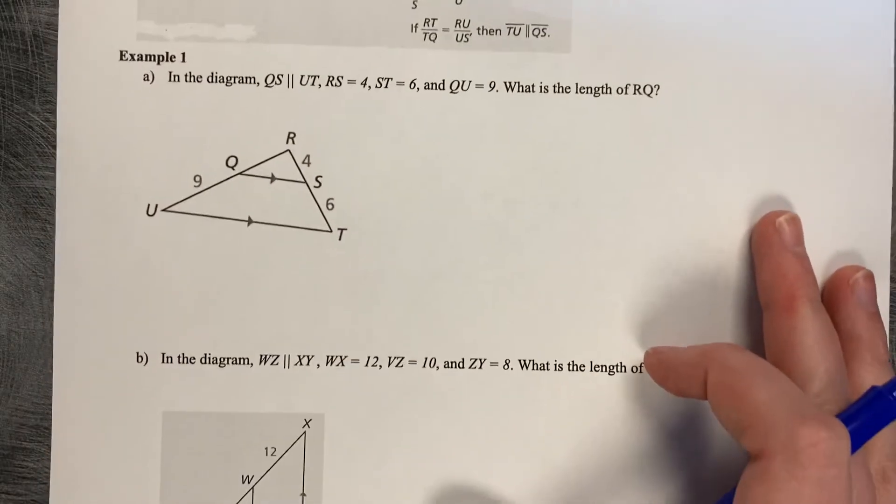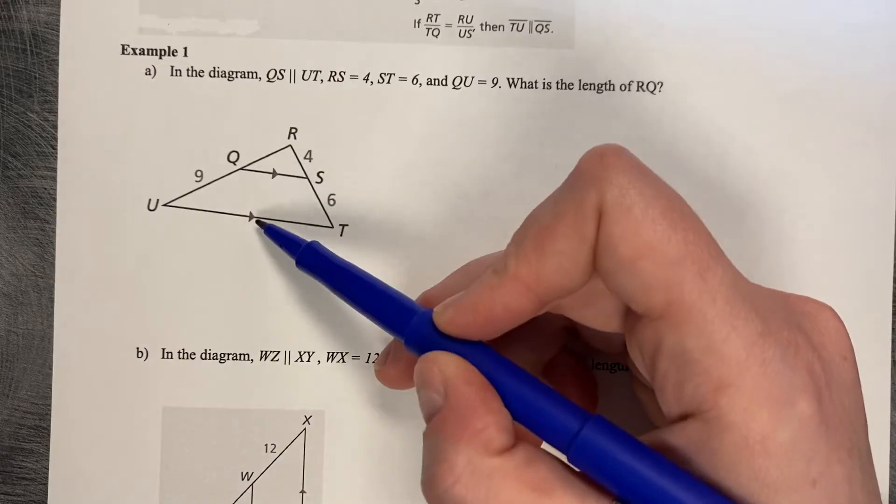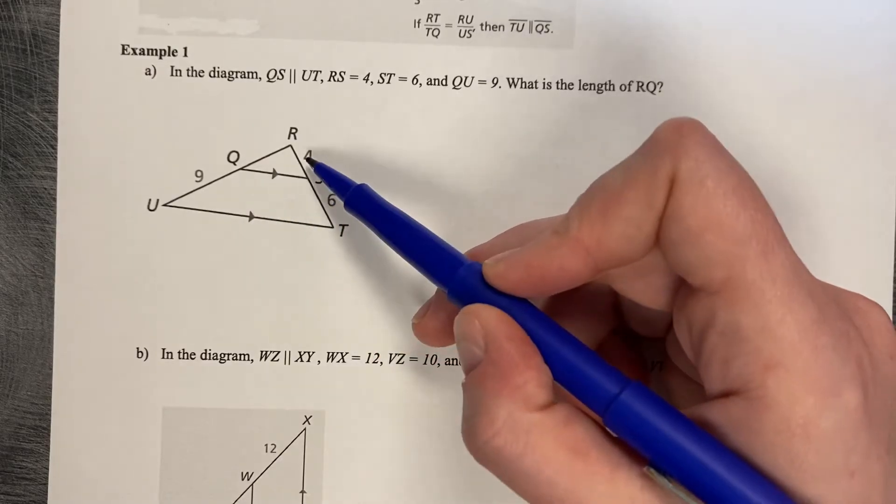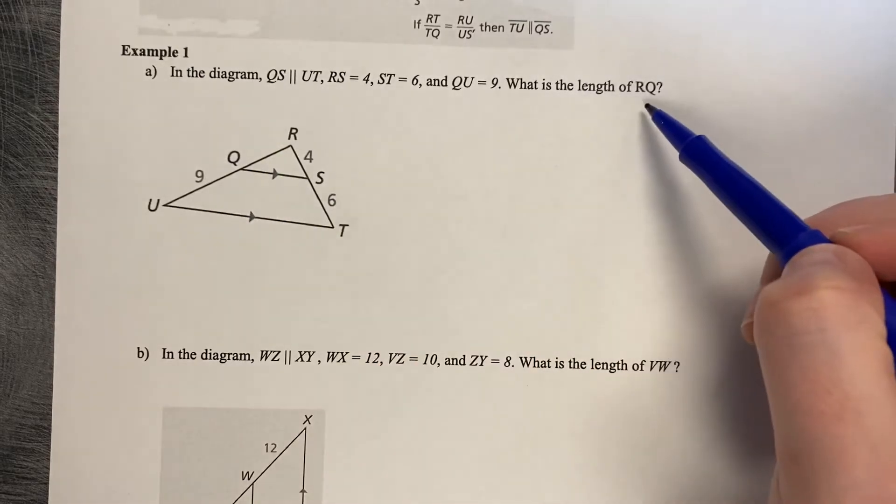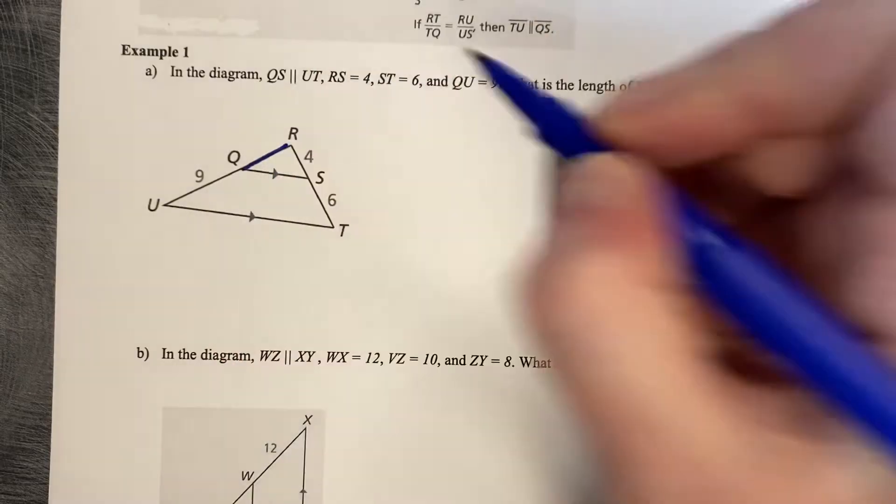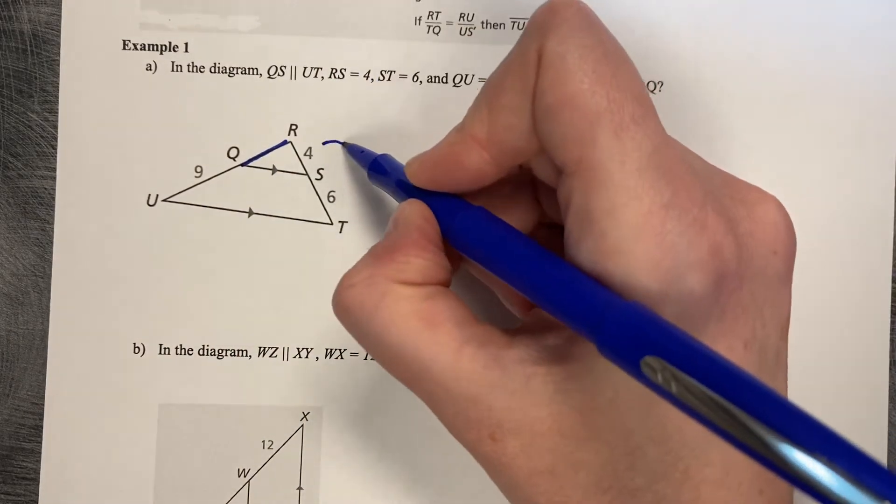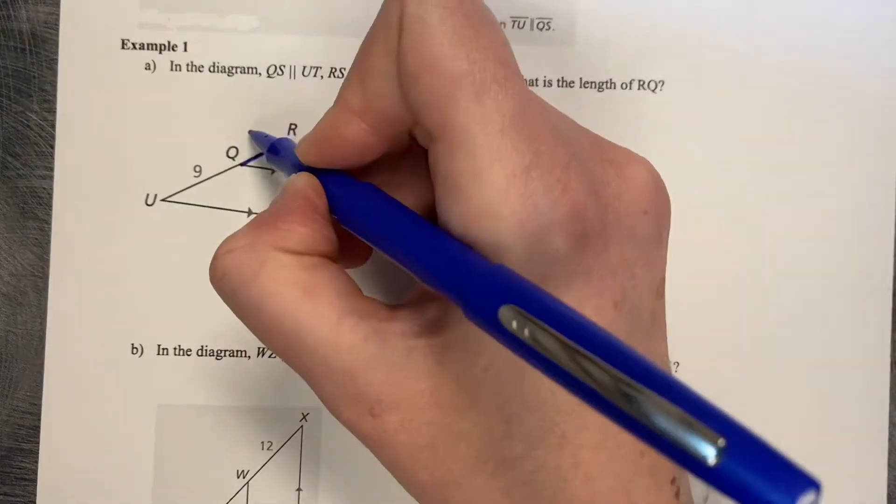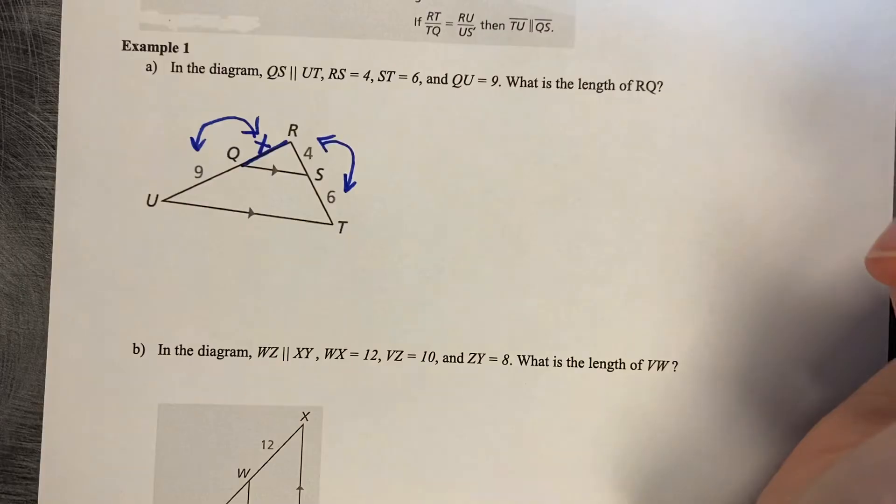Let's try this on. In the diagram, QS is parallel to UT. RS is 4, ST is 6, QU is 9. What is the length of RQ? So we're looking for this length right here, RQ. Since they're parallel, the side lengths are proportionate to each other. I can call this missing length X.